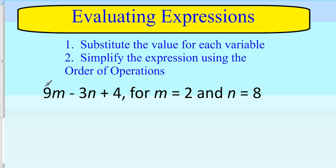I have the algebraic expression 9m minus 3n plus 4. I know m equals 2 and n equals 8. I'm going to rewrite my expression, but this time I'll substitute the values for the variables.